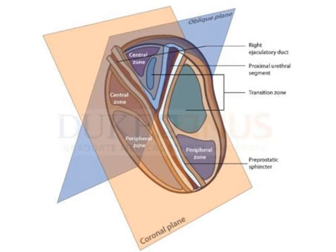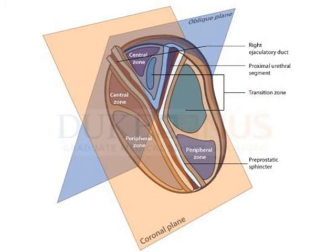There are multiple zones of the prostate. The transitional zone is located within the prostate gland and actually surrounds the urethra. This is where BPH usually occurs. In contrast, the peripheral zone of the prostate, which is located towards the exterior of the gland, is where most prostate cancers tend to originate.